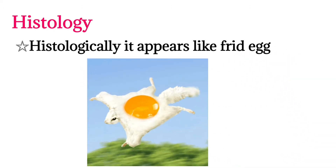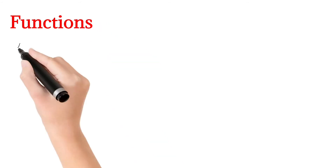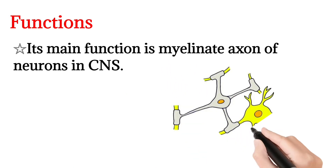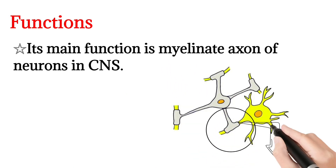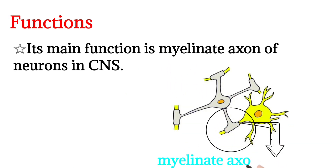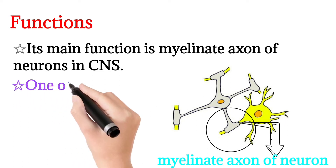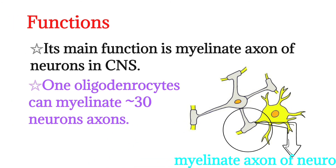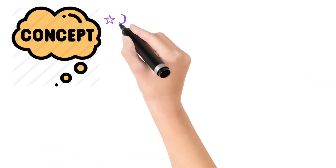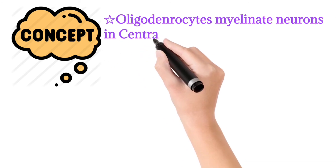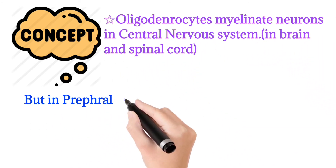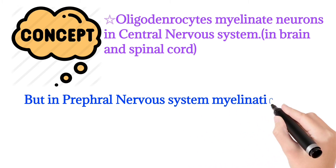The main function of oligodendrocytes is to myelinate axons of neurons in the central nervous system. One oligodendrocyte can myelinate up to 30 neuron axons. Oligodendrocytes myelinate neurons in the brain and spinal cord, while in the peripheral nervous system the myelinating cells are Schwann cells.